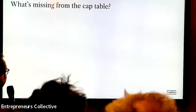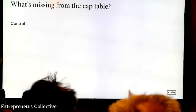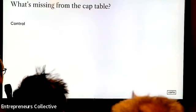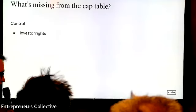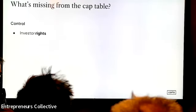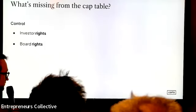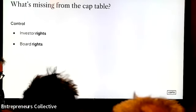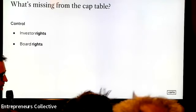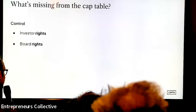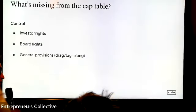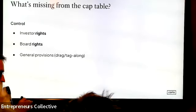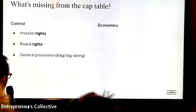What's commonly missing from cap tables when people present them for fundraising is everything around control. You could have a bunch of people owning 20% or 10%, but with bigger investors they might have certain key rights in the governance of the business. When raising from investors, any special rights must be disclosed. Board rights should be disclosed — to what extent are board members involved in or interfering with management? Other things like drag-along and tag-along provisions should also be included — when can you force other investors to exit, and when can investors tag along in a liquidity event?